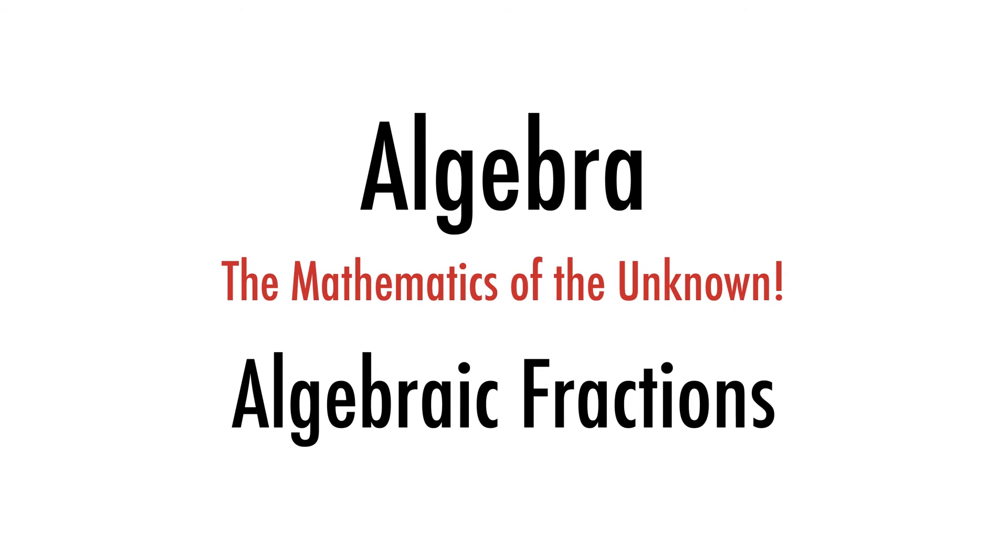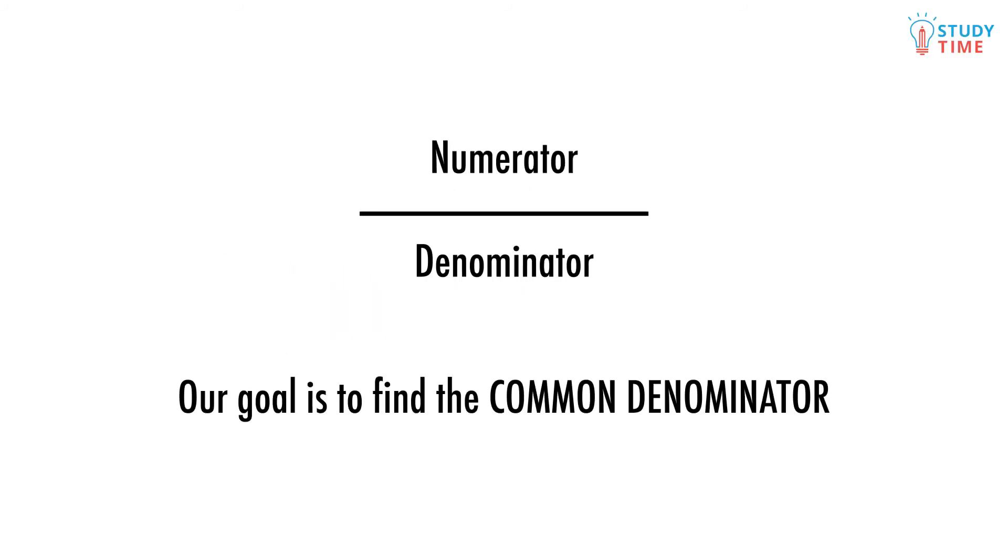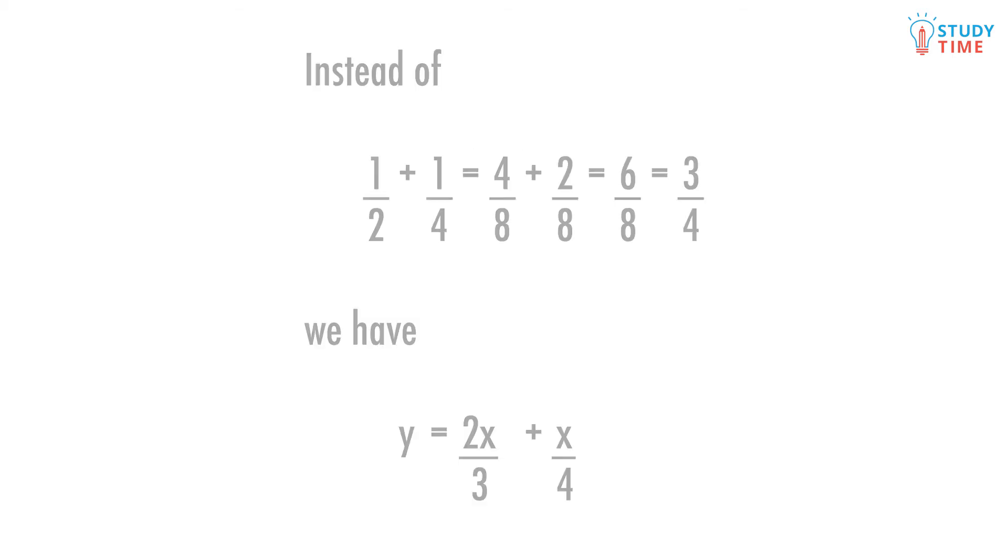Algebraic fractions work like any other fractions. We have the numerator up top and the denominator down the bottom. When adding, subtracting, multiplying or dividing fractions, the key is to find a common denominator. What makes these fractions algebraic?